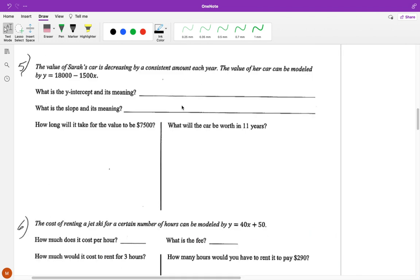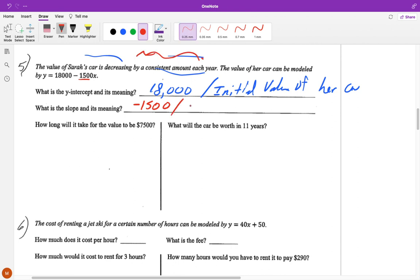All right. Now we're going to go over the next page. All right. So for this one, it says the value of Sarah's car is decreasing by a consistent amount each year. The value of her car can be modeled by Y is equal to 18,000 minus 1500x. So it tells us it's decreasing by a consistent amount each year. So that's telling us what our slope is. So when we look at this, what is the Y intercept? Well, it's 18,000. So if it says that the value of Sarah's car is decreasing by a consistent amount each year, well, this is then the initial value of her car or how much her car is worth now. If we want to say it's what she's at now. And the slope, we know it's how much it's changing by, so we know it's this, so minus 1500. And it says it's decreasing by a consistent amount each year. So that's how much value the car loses each year.